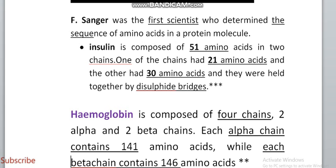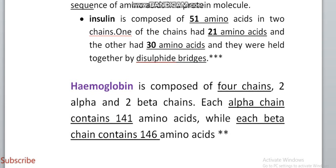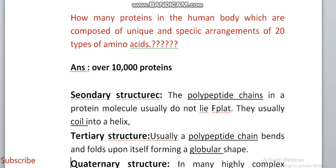F. Sanger was the scientist who determined the sequence of amino acids. In insulin, he found 51 amino acids present in two chains — the alpha chain has 21 amino acids and the beta chain has 30 amino acids — linked by disulfide bridges. In hemoglobin, four chains are present: two alpha chains containing 141 amino acids and two beta chains containing 146 amino acids. The human body has 10,000 proteins composed of unique and specific arrangements of 20 types of amino acids.